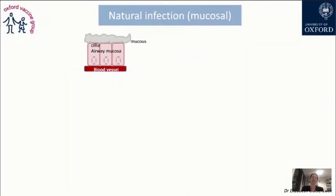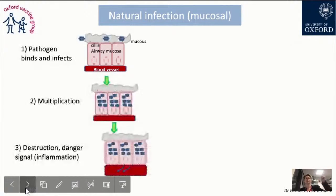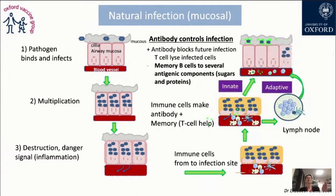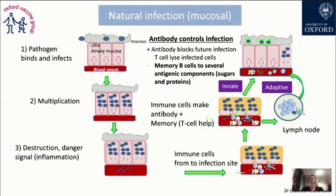In a natural infection, the pathogen comes and binds and infects, for example, the mucosa, multiplies, and there is destruction of the tissue — that is the danger signal. Immune cells come to the infection site, then move to the lymph nodes where you have an adaptive immune response. The innate immune response also provides a signal to confirm the danger and push the immune system. You raise antibodies to control and block future infection, and also T cells that can lyse infected cells, plus memory B cells for the next encounter with the pathogen.